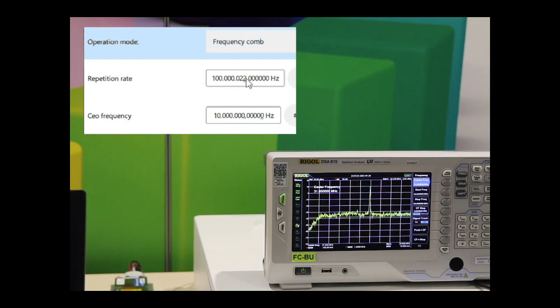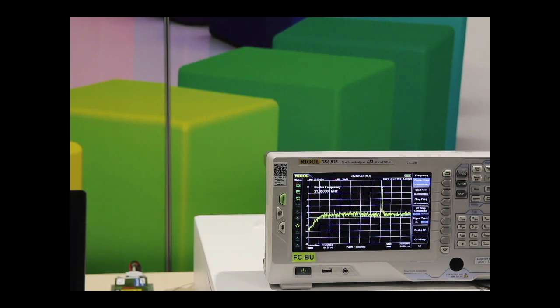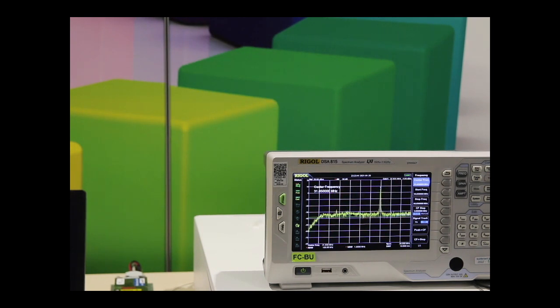I go to the software, I click here, and then I start switching this up. You can see how it moves to the right, so it increases, which implies that the beat signal is negative.